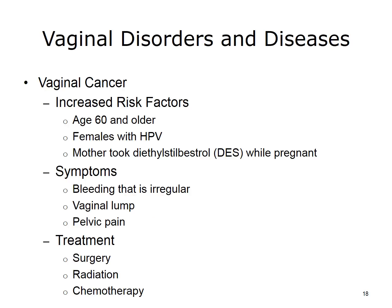The last disease of the female reproductive system is vaginal cancer. Risk factors include being over age 60, having HPV, and having a mother who took diethylstilbestrol, or DES, while pregnant. Symptoms of vaginal cancer include irregular bleeding, lumps in the vagina, and pelvic pain. Treatment options include surgery, radiation, and chemotherapy.